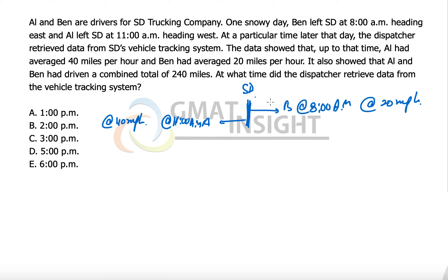It showed that Al and Ben had driven a combined total of 240 miles. So basically I am drawing three scenarios. Number one you already have here. The second is when Al is just starting off from here while Ben has already moved a distance of 60 miles from SD company office, and Ben is still traveling east at a speed of 20. That is because it is the time at 11 AM.